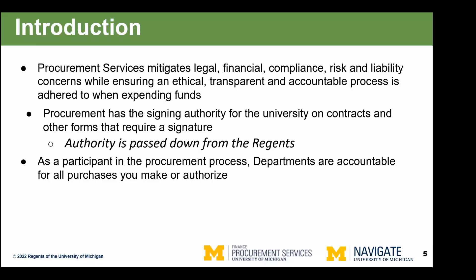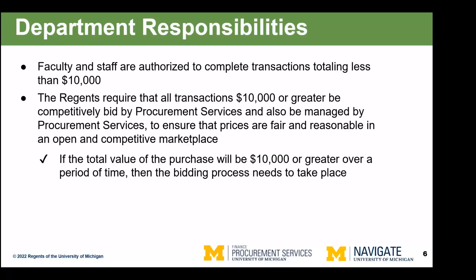Procurement also has signing authority for any university contracts. This signature authority is passed down from the regents. As a participant in the procurement process, departments are accountable for the purchases you make. In general, faculty and staff are authorized to complete transactions totaling less than $10,000. All the usual policies must be followed, but essentially you are running your own procurement under $10,000, provided that nothing needs to be signed or we're not looking at a long-term contract.